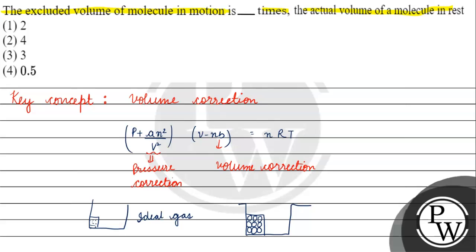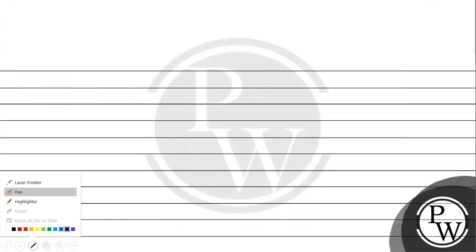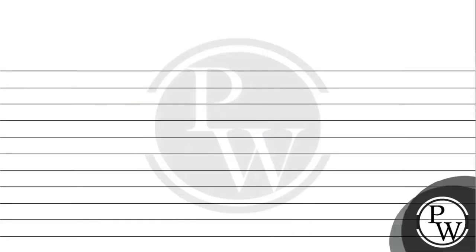Now, what are the questions we have asked? The excluded volume of a molecule in gas is dash times the actual volume of a molecule in gas. Now we are going to consider two molecules, A and B.